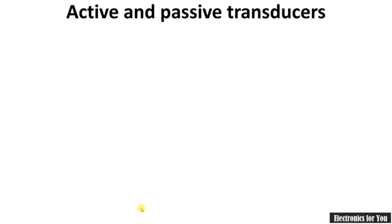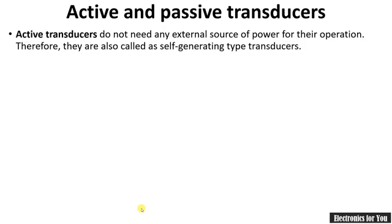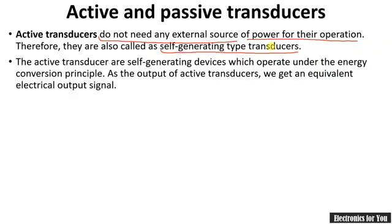The first classification is active and passive transducers. Active transducers do not need an external power source for operation — they are called self-generating type transducers. In contrast, most transducers require DC supply for conversion of quantities into an electrical signal. With an active transducer, we directly get the output in the form of an electrical signal. An example is the piezoelectric transducer, which converts pressure into an electrical signal.